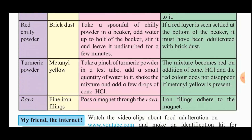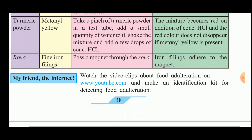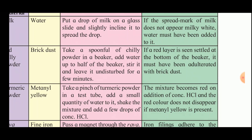For turmeric powder, methanil yellow may be added as an adulterant. Take a pinch of turmeric powder in a test tube, add a small quantity of water, shake the mixture, and add a few drops of concentrated HCl. If methanil yellow is present, the mixture turns red on addition of concentrated hydrochloric acid and the red colour does not disappear. For rava, fine iron filings may be added — pass a magnet through the rava and iron filings will adhere to the magnet.